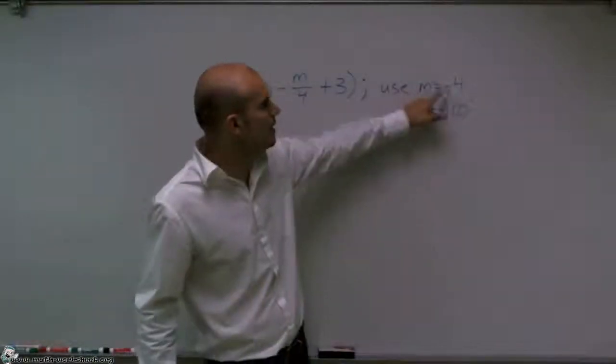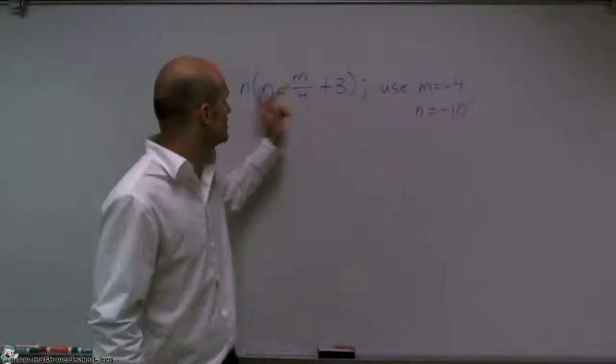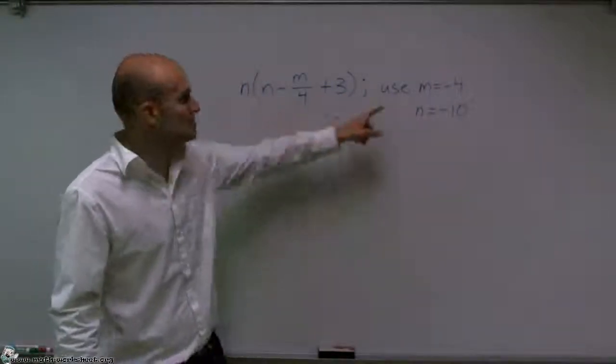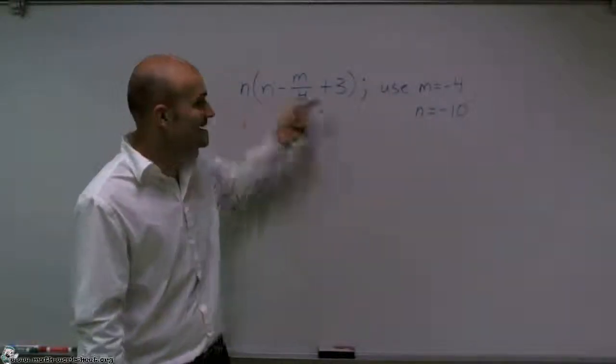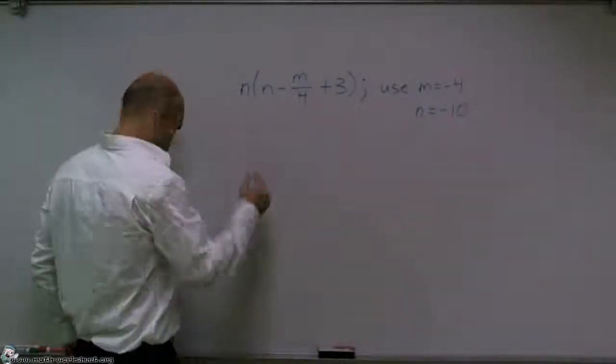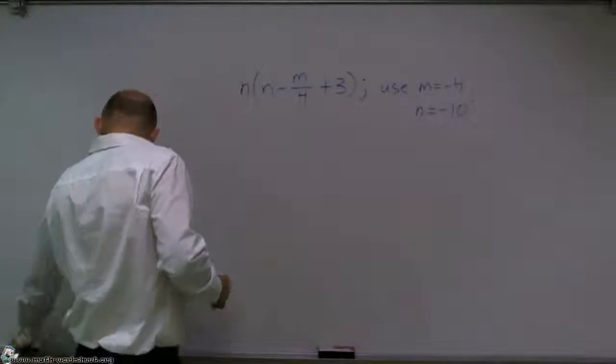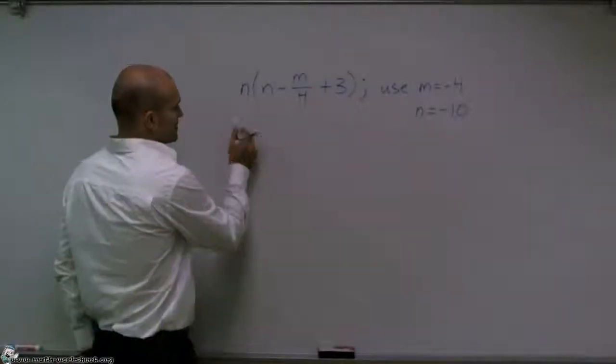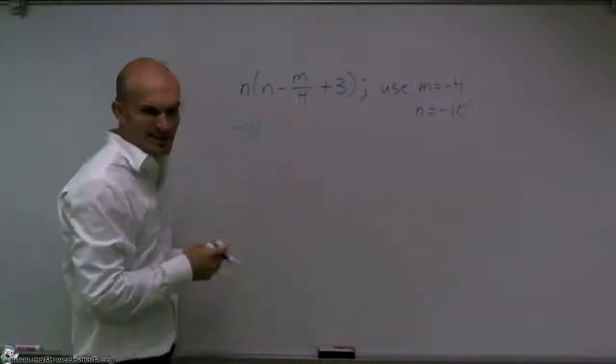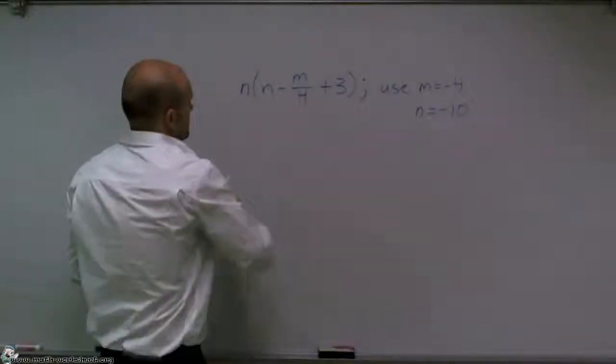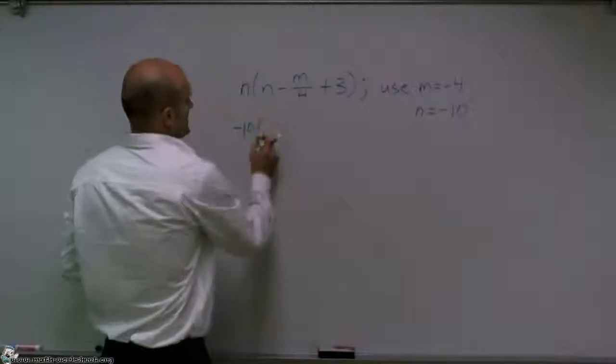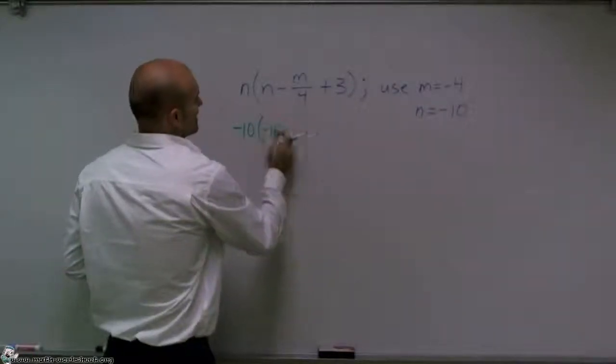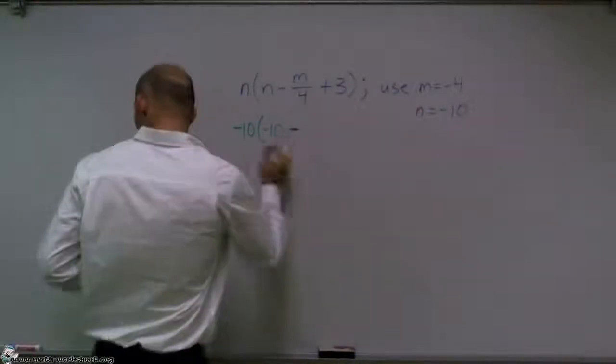So let's now replace the values of our variables and for the variables. So rather than writing m, I can now write negative 4. And rather than writing n, I'm going to write negative 10. So I'm actually going to utilize my colors here. So you can see when I represented or substituted them in.